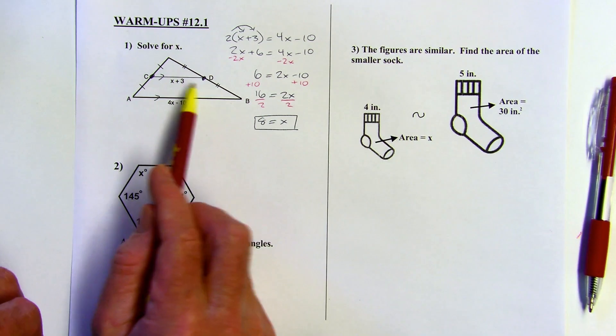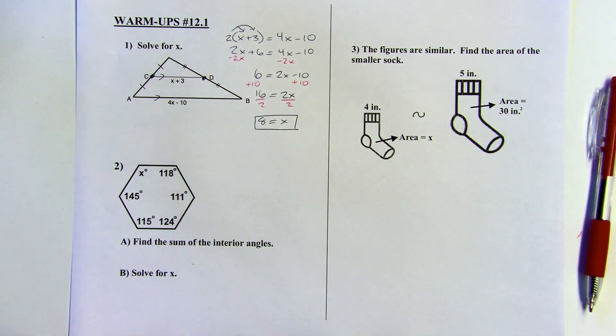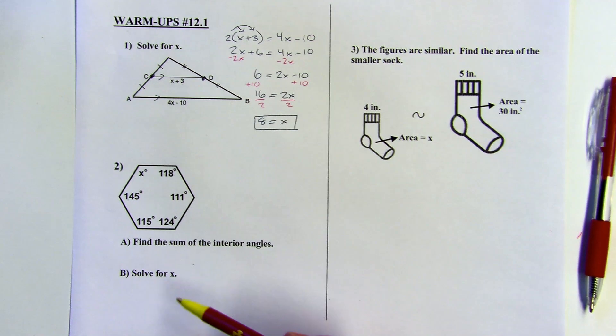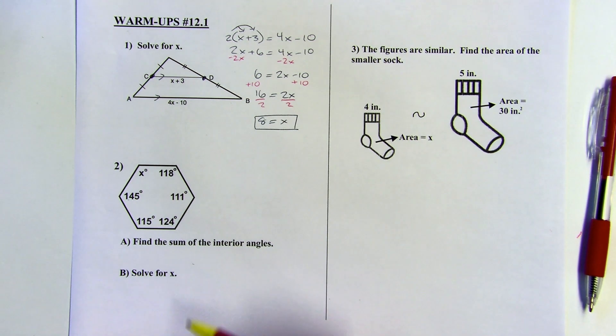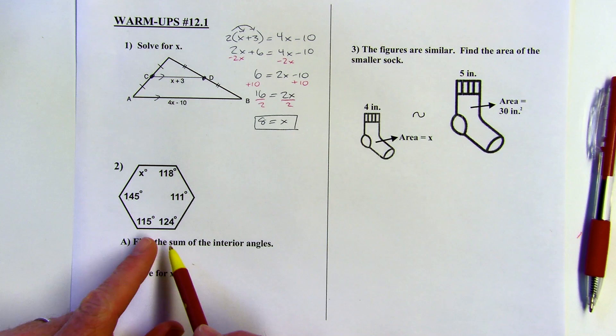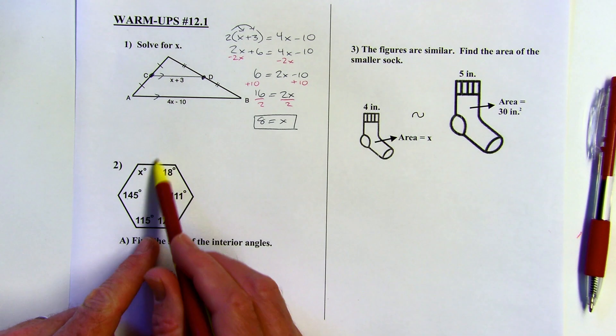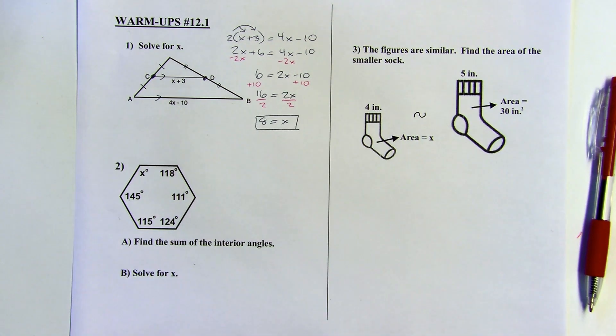Now if I needed to find those segments, I could plug in the X value. All right. Next up, I've got this polygon here. So first thing I need to figure out is how many sides I've got. Let's count them up. 1, 2, 3, 4, 5, 6. This is a hexagon. It has six sides.